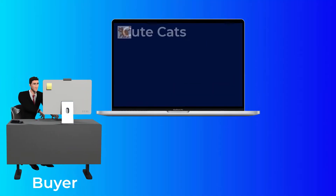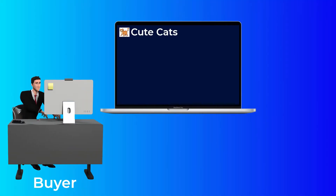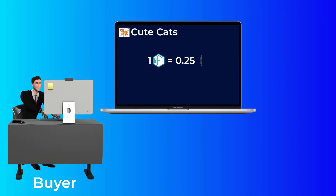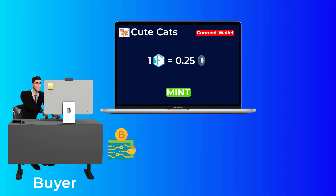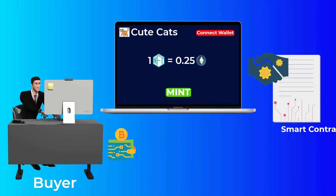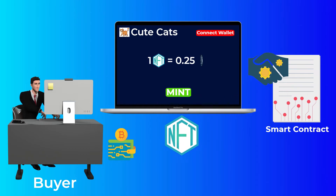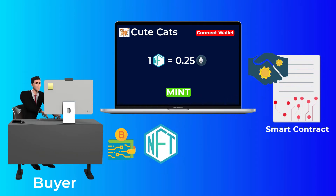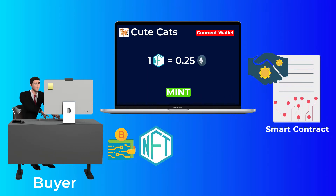Popular NFT collections most of the time let buyers mint their NFTs from the project's website. So the buyer goes to the project's website, connects his wallet, and clicks on the mint button, then pays the gas fees. The smart contract will then automatically mint a randomly chosen NFT for the buyer.